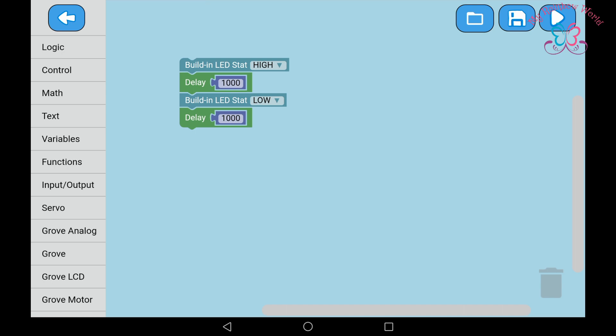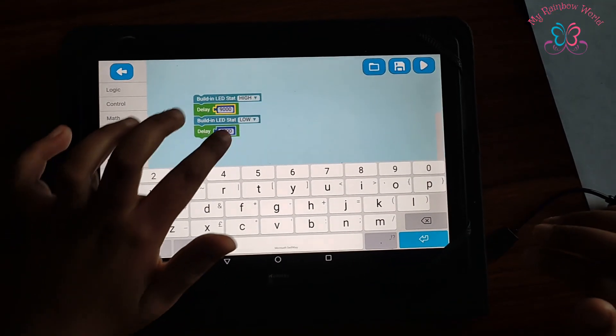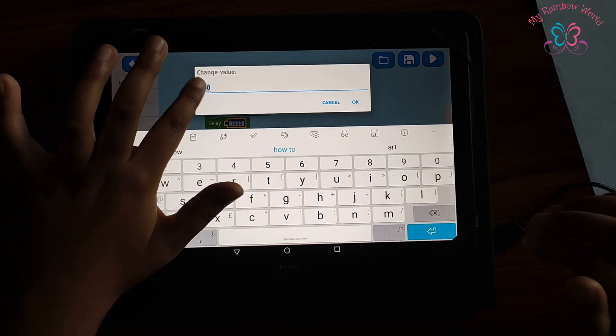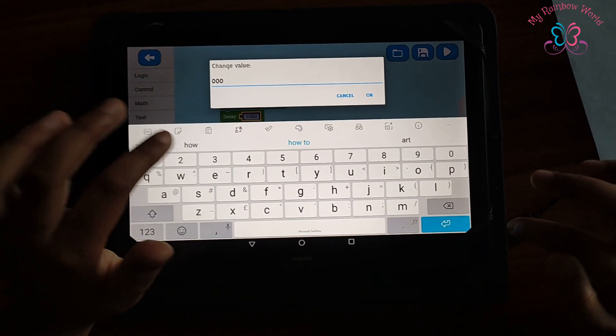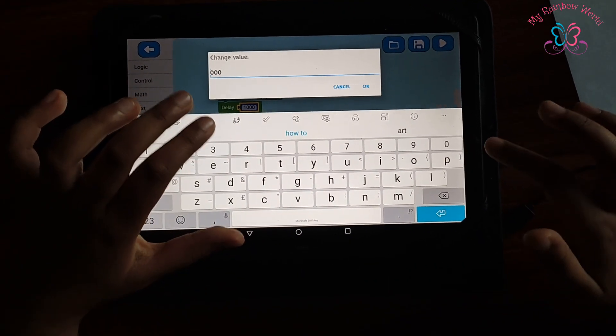Here I have written a program to blink the LED on and off for one second. Press the save button and the play button on the top to flash the program onto the Arduino.